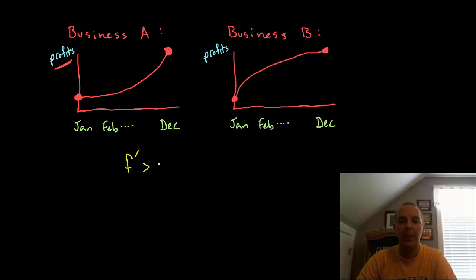F prime would be positive here because it has positive slope everywhere January through December. And here F prime would be positive January through December.